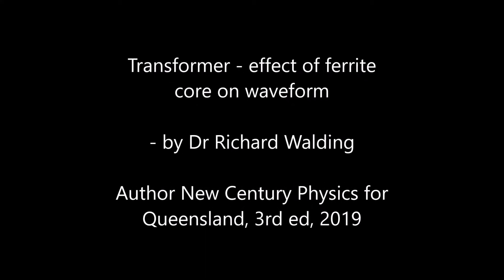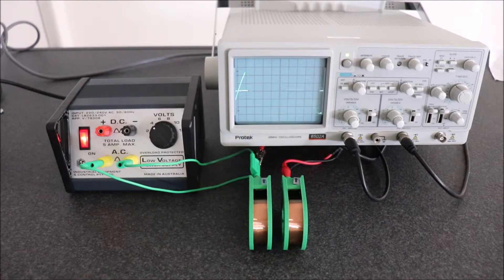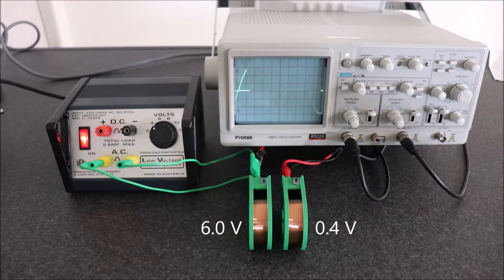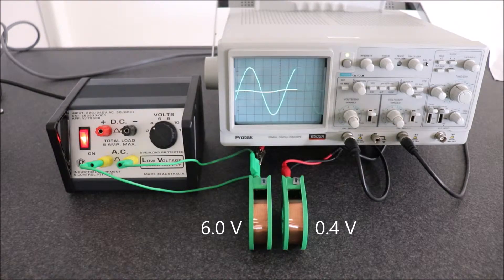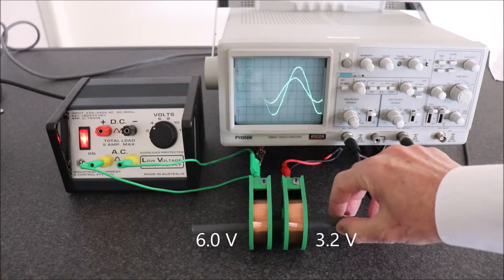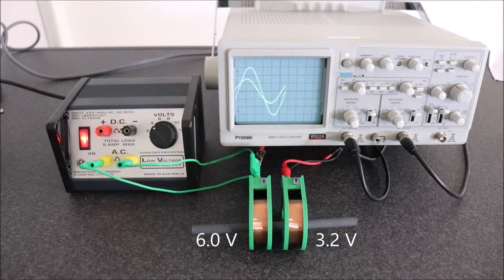In this demo we're going to have a look at the waveform on a simple transformer, starting with a 6 volt AC source, 50 Hertz, as an input into two coils. You can see the primary coil is 6 volts, the secondary coil is 0.4 volts. I introduce a ferrite rod and you'll notice the secondary goes up to about 3.2 volts or somewhere around about there.